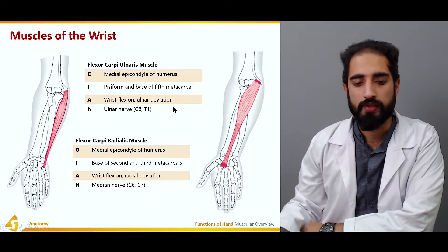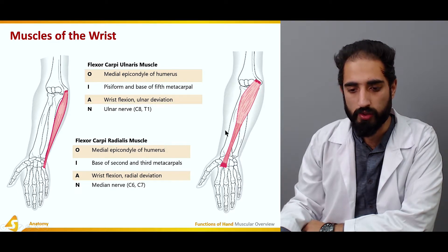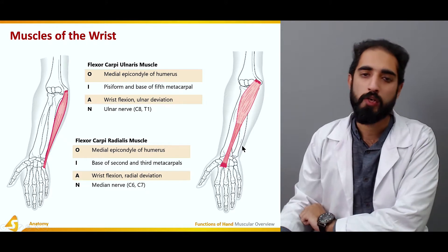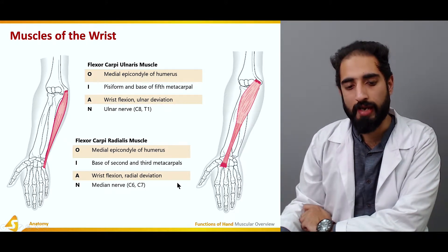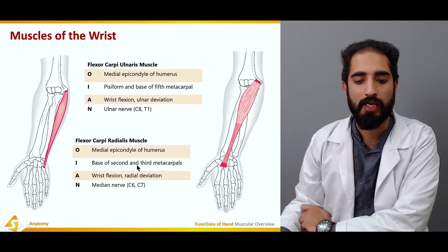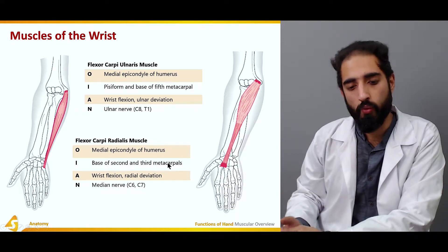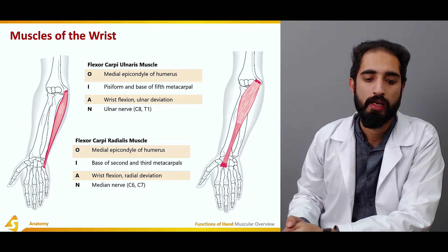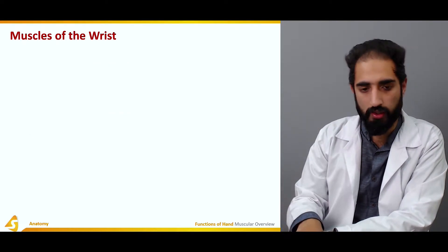The flexor carpi radialis also arises from the medial epicondyle of the humerus but crosses toward the opposite side and inserts at the lateral aspect of the hand at the base of the second and third metacarpals. Its function is wrist flexion with radial deviation, because it crosses to the opposite side. Its nerve supply is the median nerve.